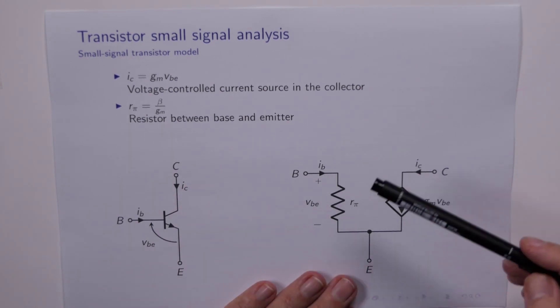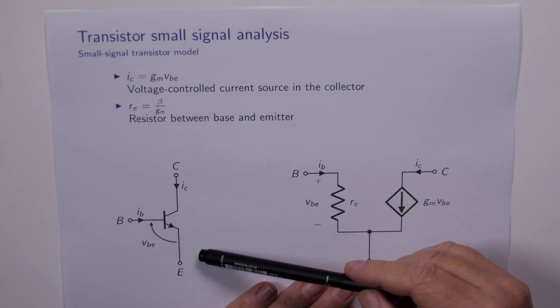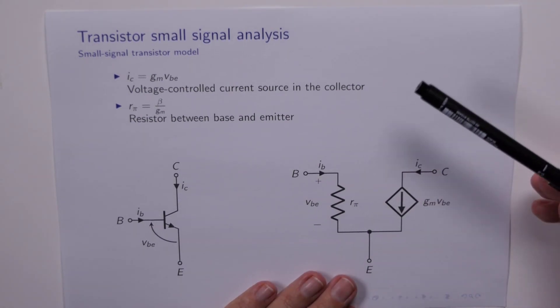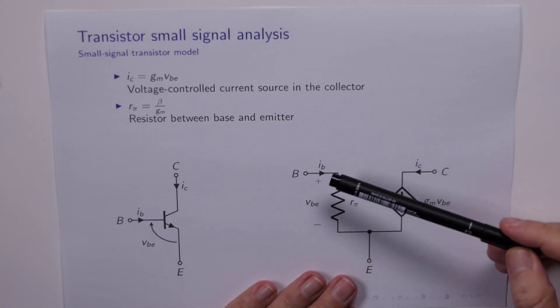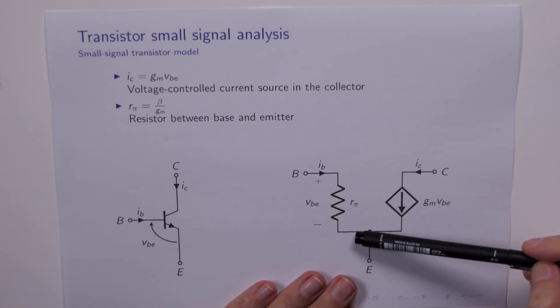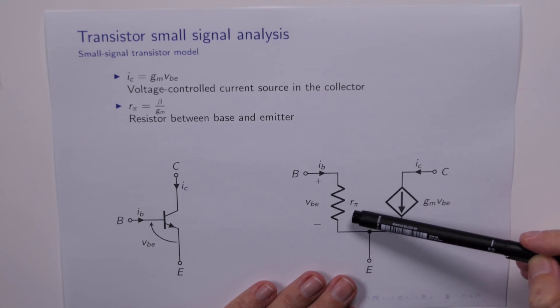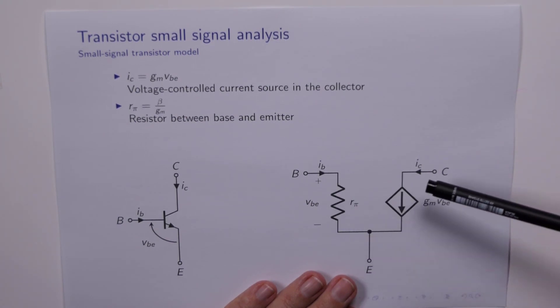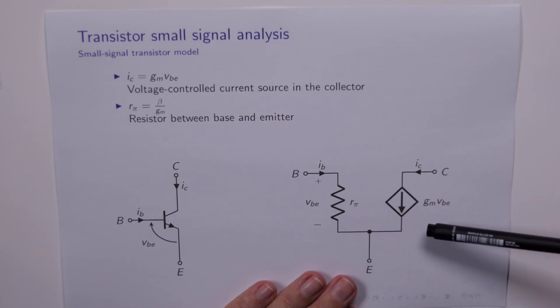And so this is what we do. Here is the outside view of the transistor, and internally we're suggesting that between the base and the emitter we put a resistor equal to R pi, and between the collector and the emitter we put a voltage controlled current source. And that's it. This is the small signal equivalent circuit of the bipolar junction transistor.